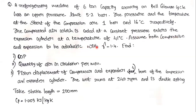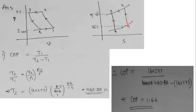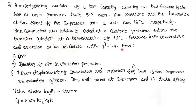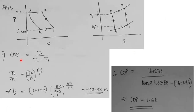Since compression and expansion are adiabatic, processes 1→2 and 3→4 are shown as vertical lines on the TS diagram. Now, to find the COP of the refrigerator: when both compression 1→2 and expansion 3→4 are isentropic, the COP can be written as T1 / (T2 − T1).